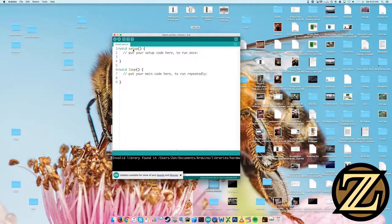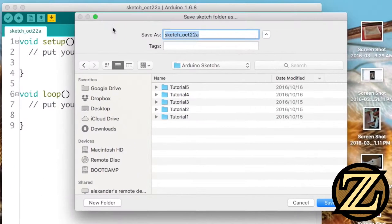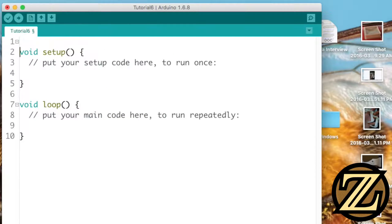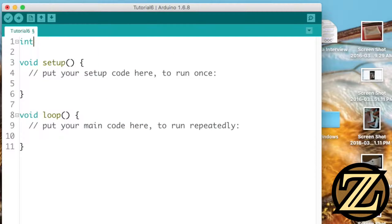Open up the Arduino IDE and give your sketch a save. I'll be calling mine tutorial6. The first thing you're going to want to do is create two integer values. The first one will be PWMpin and that will be equal to 9.